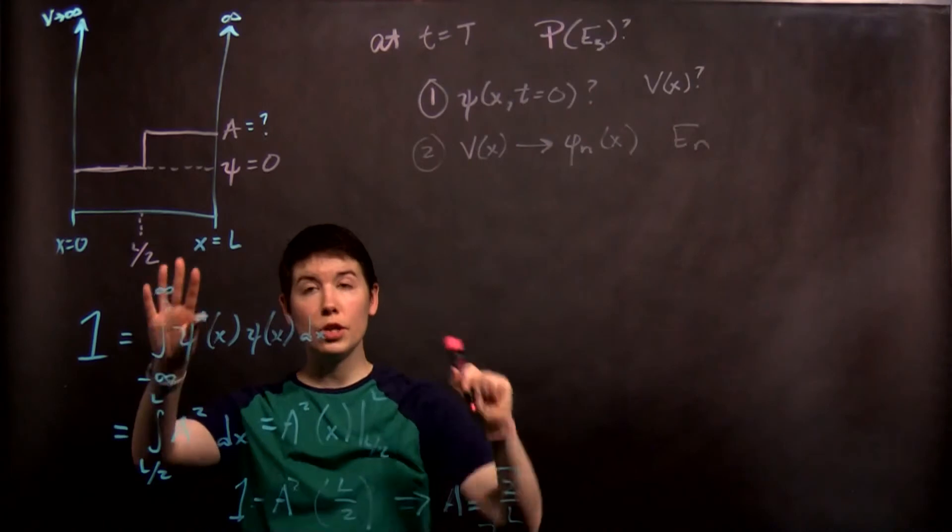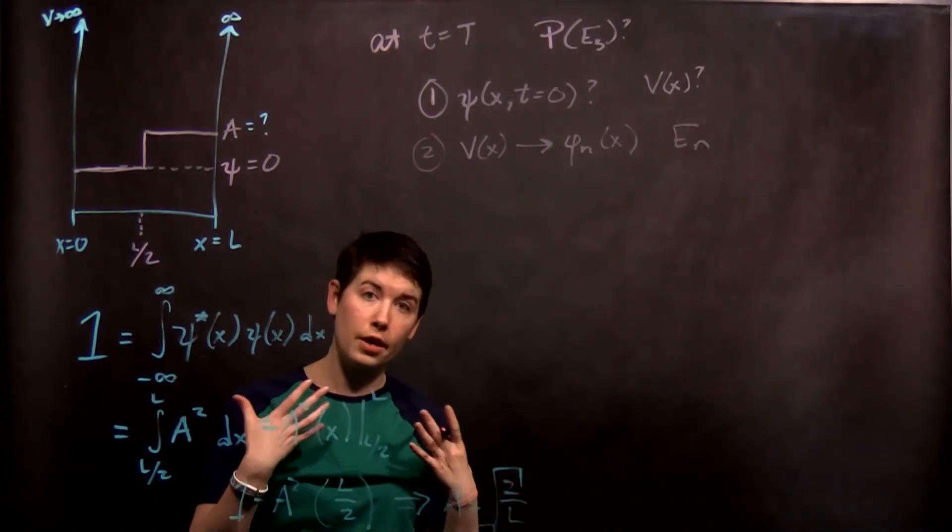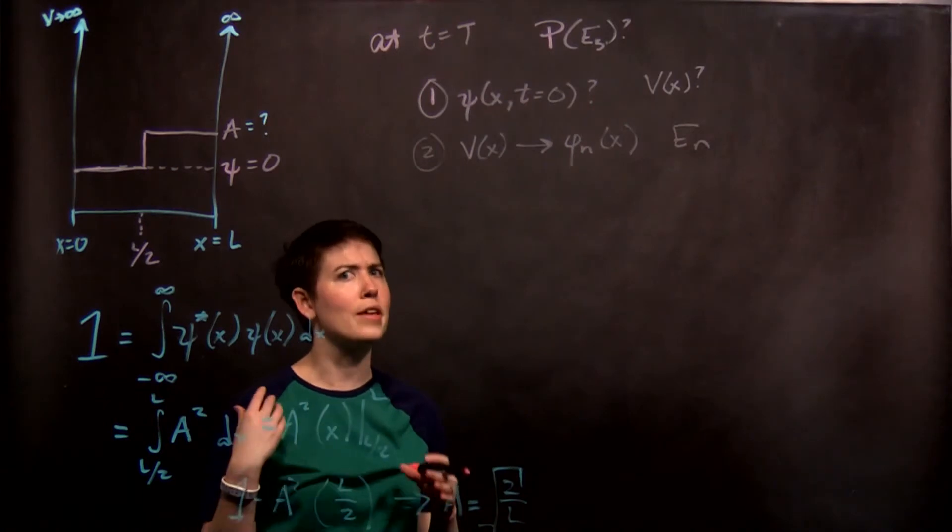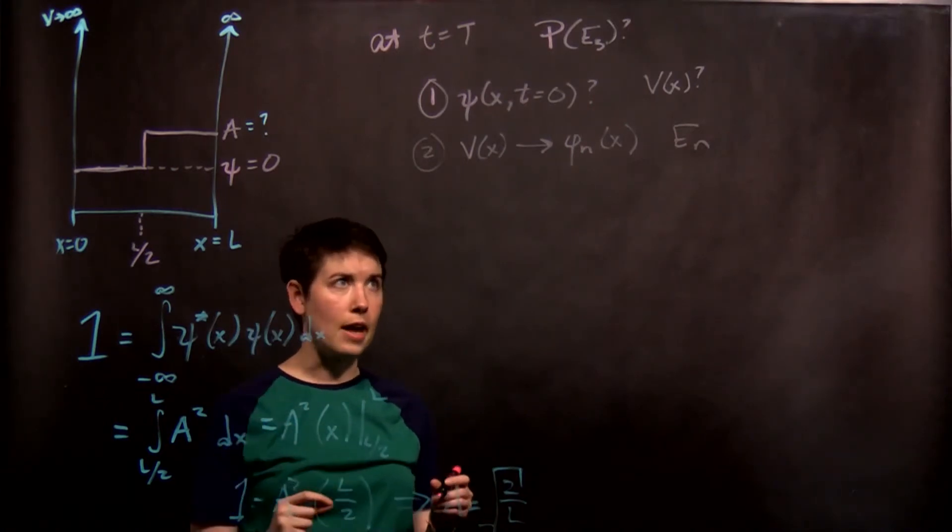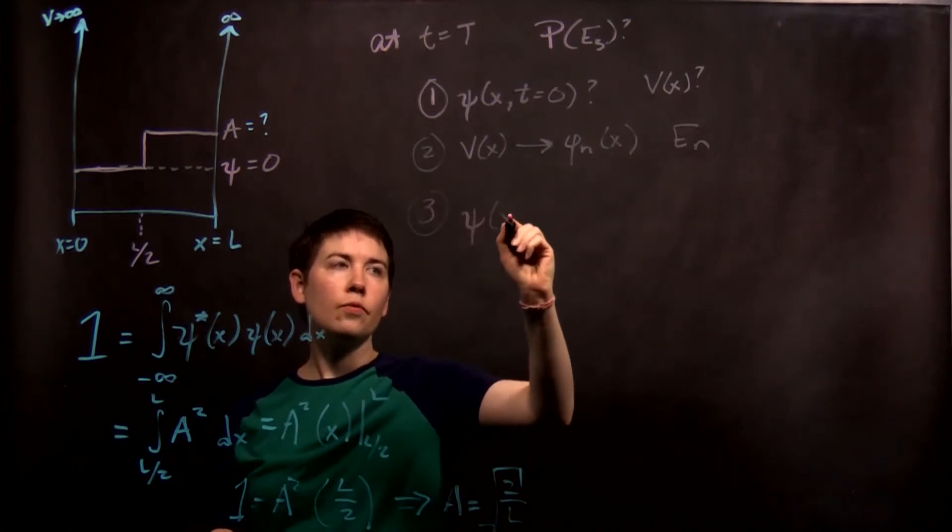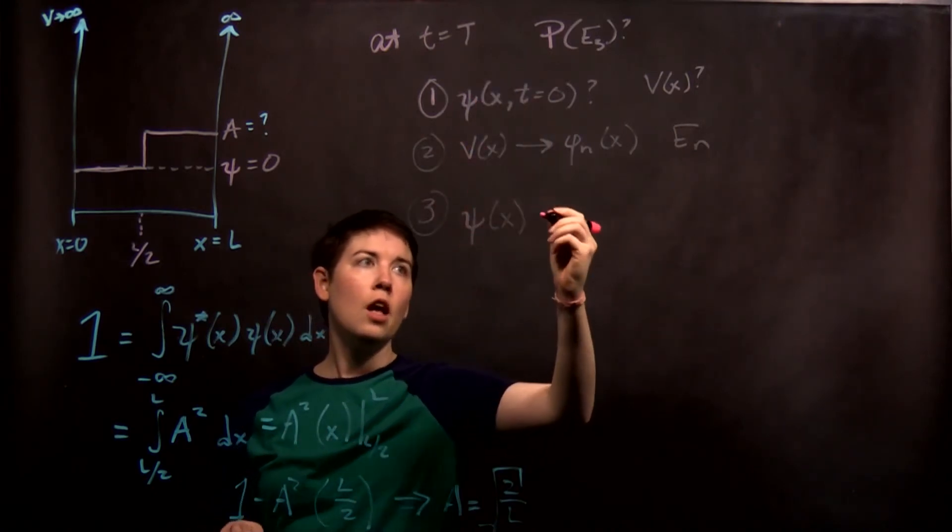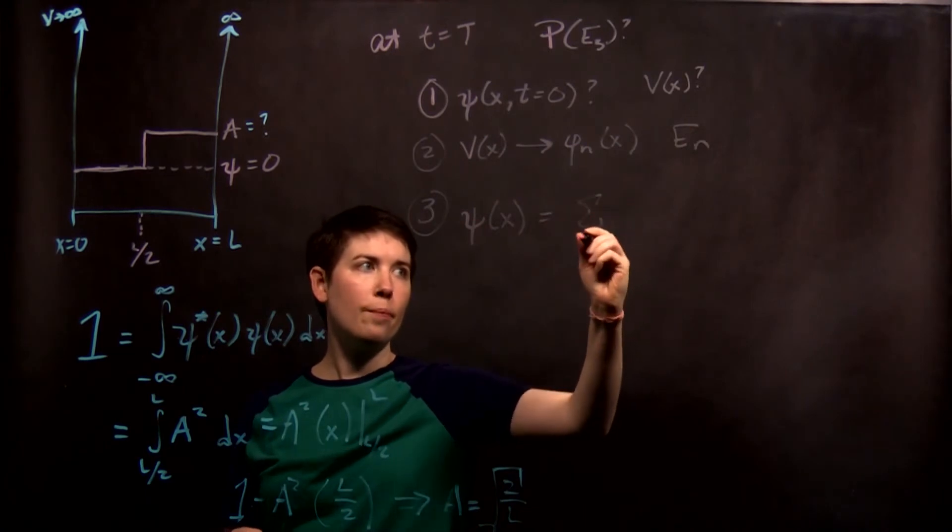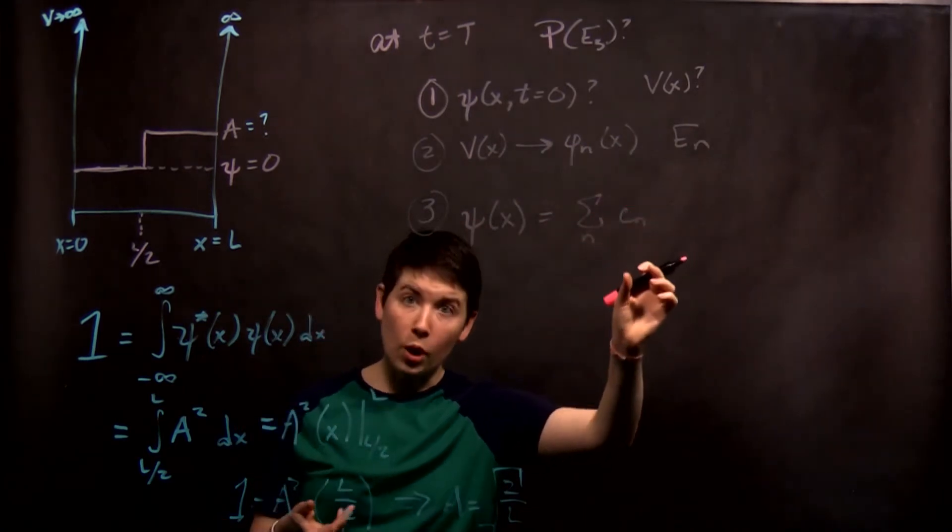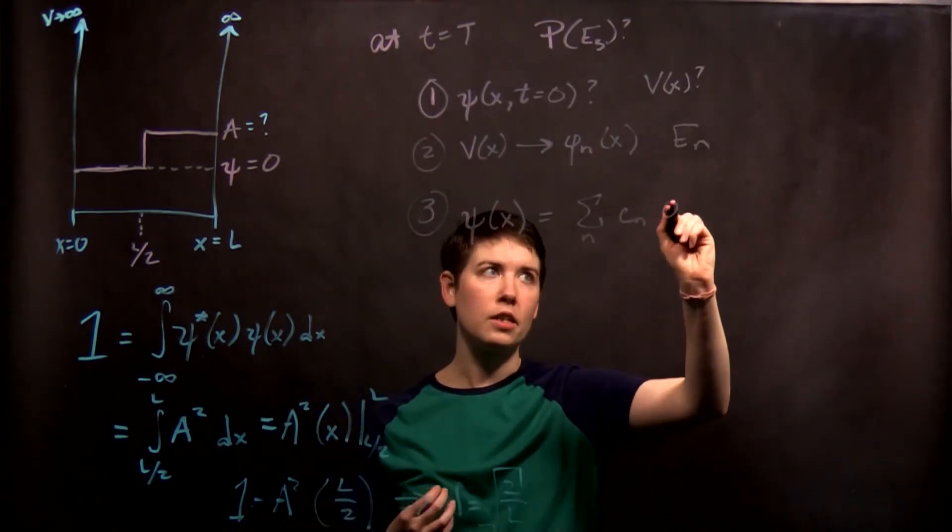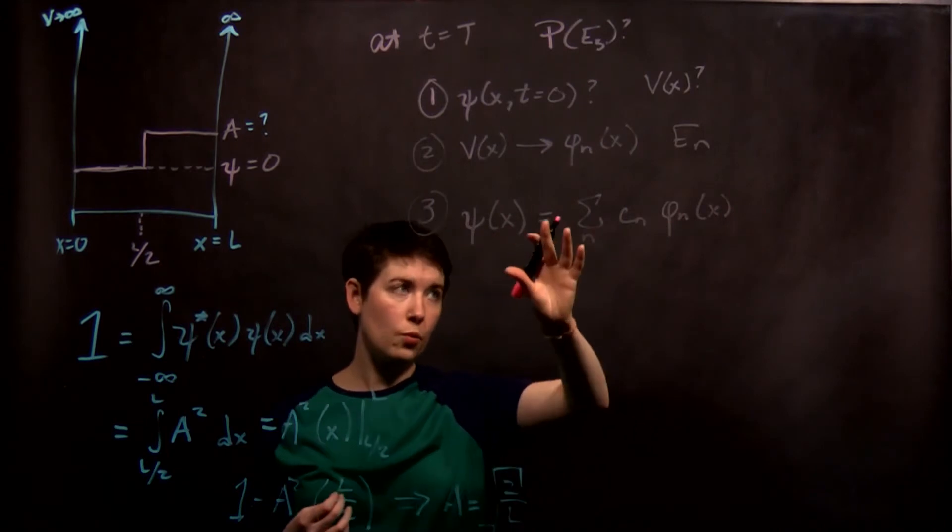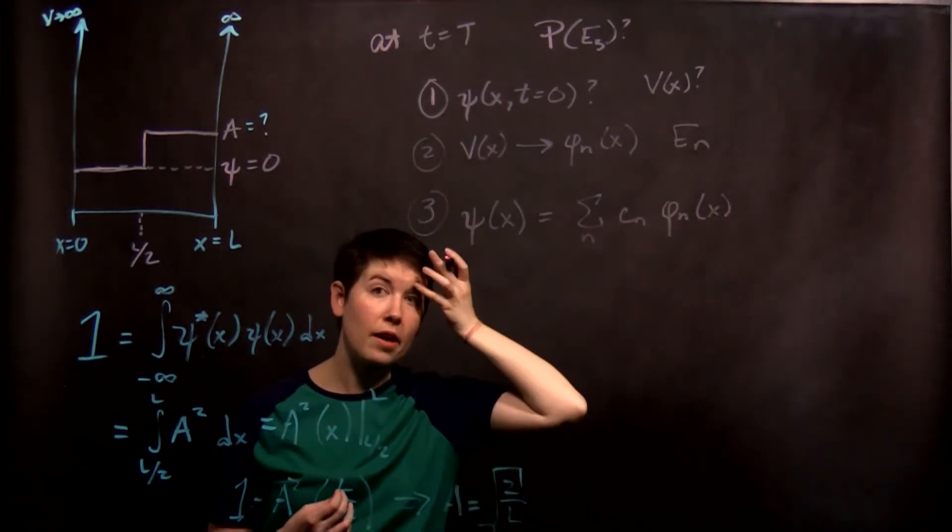We know what this is here because these are our infinite well states. Again, most common system because it's the one we can analytically solve exactly. So next what we have to do is take our initial state here and express it as a sum, and I've written this down a few times already, you should know it's coming, as some coefficients which we have to find times our energy eigenstates. Right? So we have to actually expand this out.